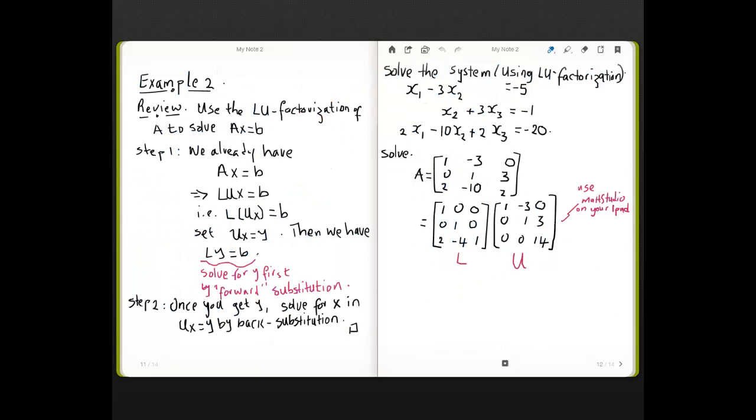Example 2. Before we get to example 2, I want us to review how to use the LU factorization of a matrix to solve Ax=B. What we have is that Ax=B. We factorize A or get the LU factorization of A. So, we end up with LUx=B. There is associativity in matrix multiplication. So, we consider the product UX. L times UX equals B. We set UX equals Y. Then, we end up with L times Y equals B.